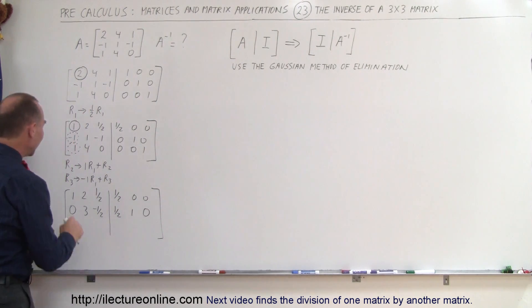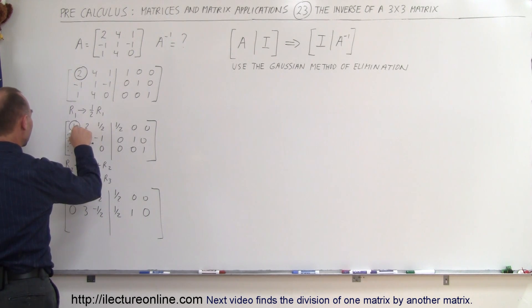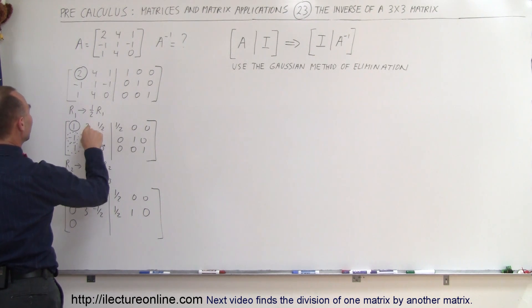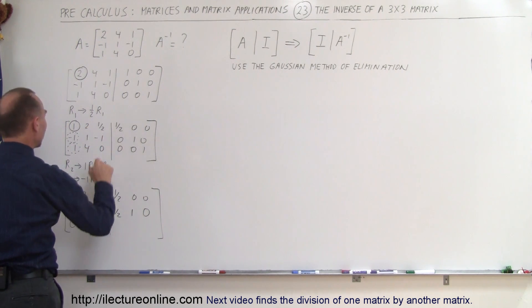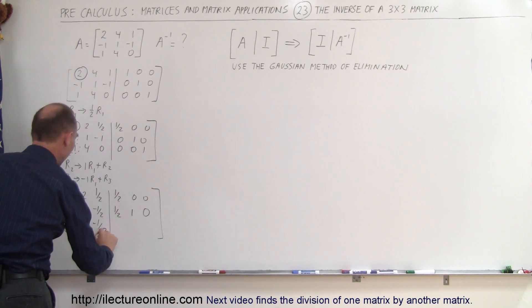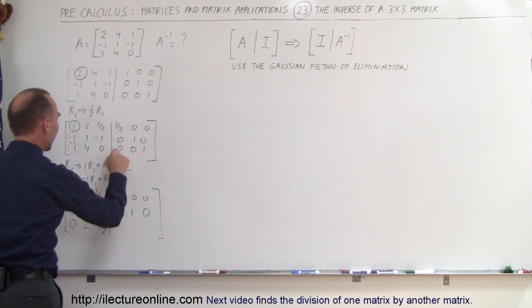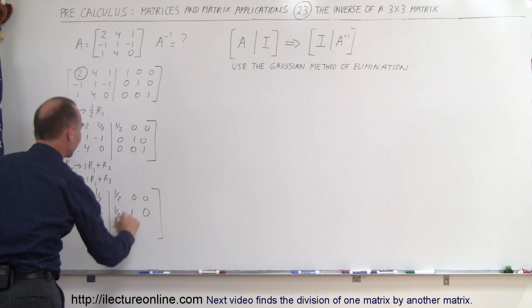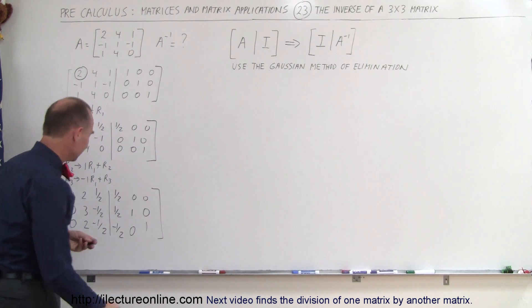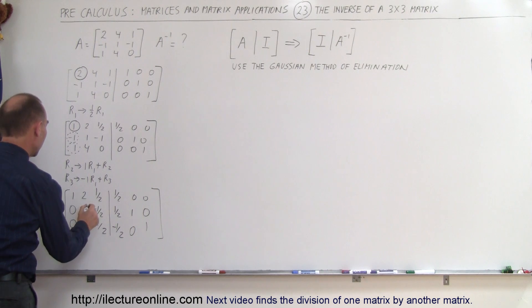For the third row: negative 1 times R1 added to row 3. Negative 1 times 1 added to 1 gives 0. Negative 1 times 2 is negative 2, added to 4 gives 2. Negative 1 times one half is negative one half, added to 0 is negative one half. Negative 1 times one half is negative one half, added to 0 is negative one half. The remaining entries are 0 and 1. Now we have the first column as 1 and all zeros.